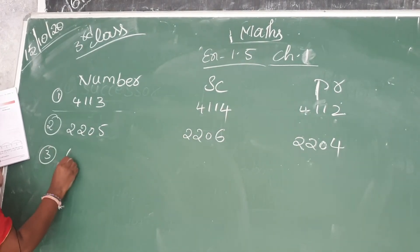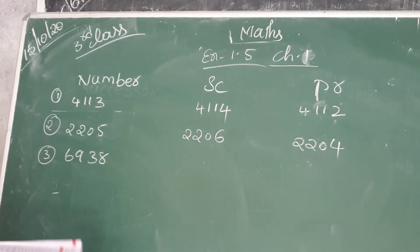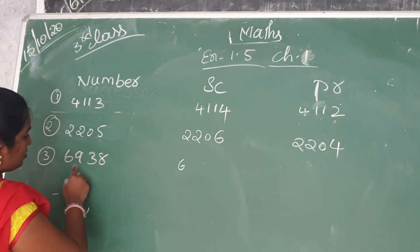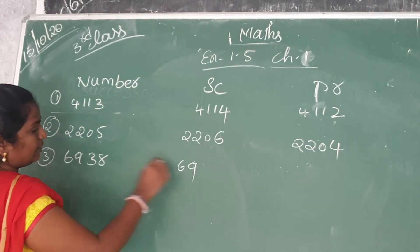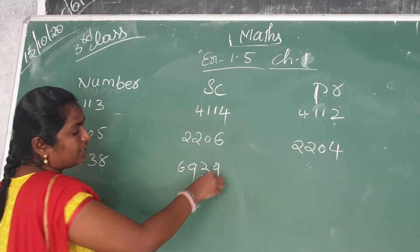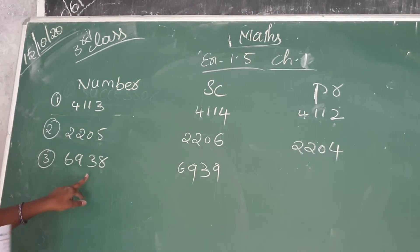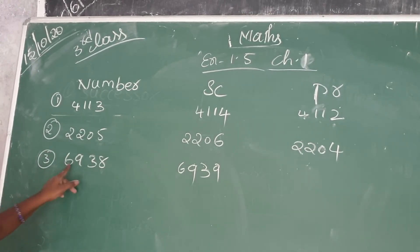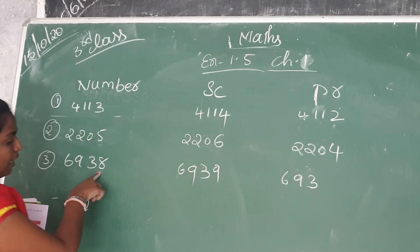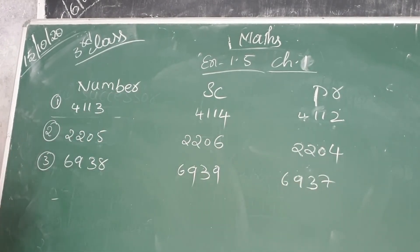Next, third one: 6938. Successor means after number — 6938's after number, 8's after number is 9, so the successor is 6939. Predecessor means minus 1 — 6938's before number is 6937. Ok?